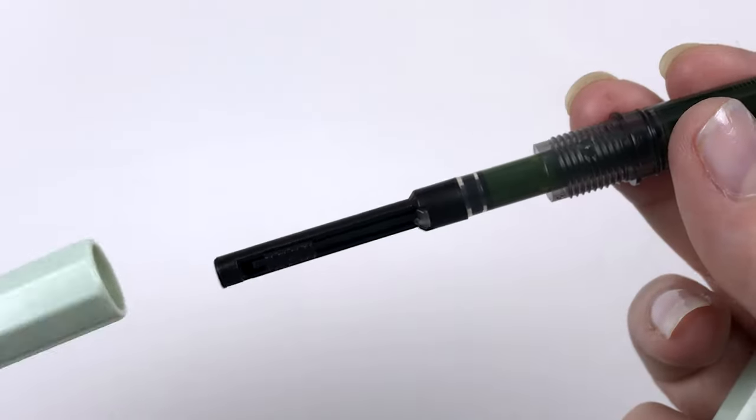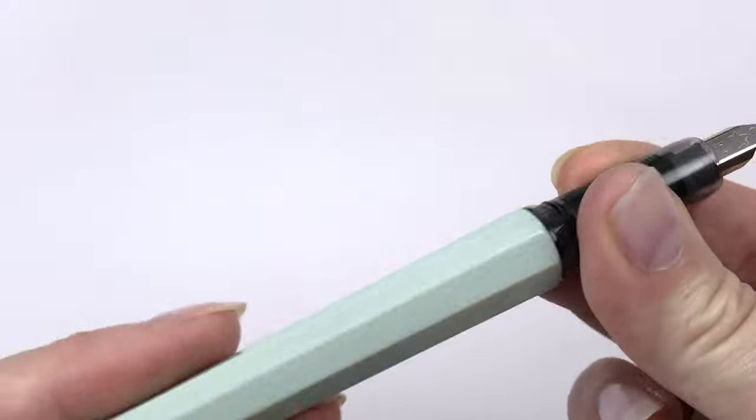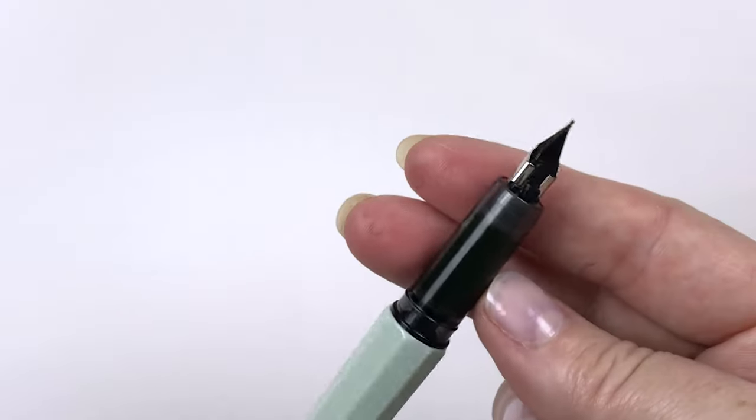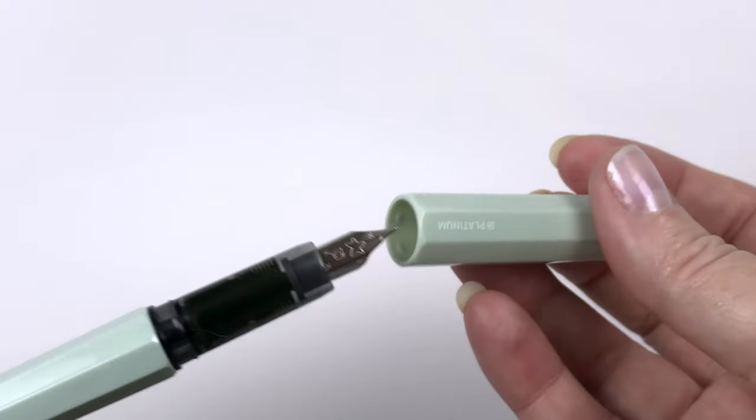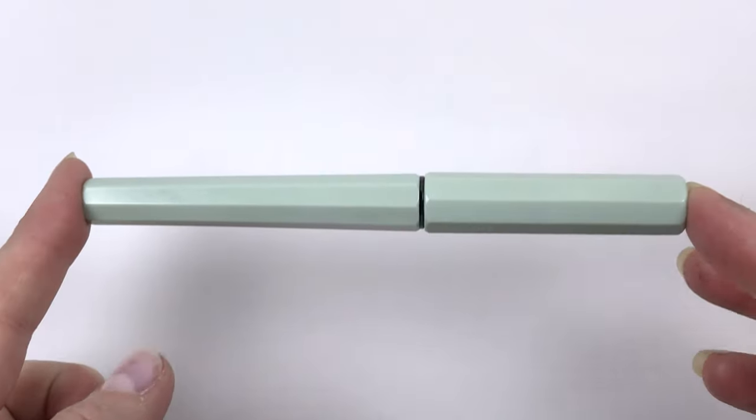These only come in a fine, so you would have to get a Platinum Preppy or Platinum Profonte to switch out the nib if you wanted a medium. This came with a converter as well, which is a really good deal. I'll put all the prices and links in the description. The prices fluctuate, but these are around $11 and the Preppies are around $5, so you're just paying for an aesthetic here.